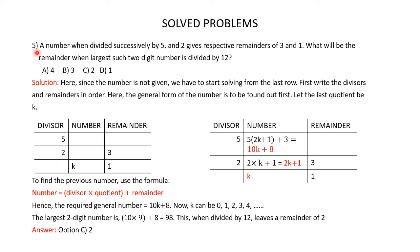Question 5: A number when divided successively by 5 and 2 gives respective remainders of 3 and 1. What will be the remainder when the largest such 2-digit number is divided by 12? You are given 4 answer options. Since the number is not given, we start from the last row and first find the general form of the number. Let the last quotient be K.